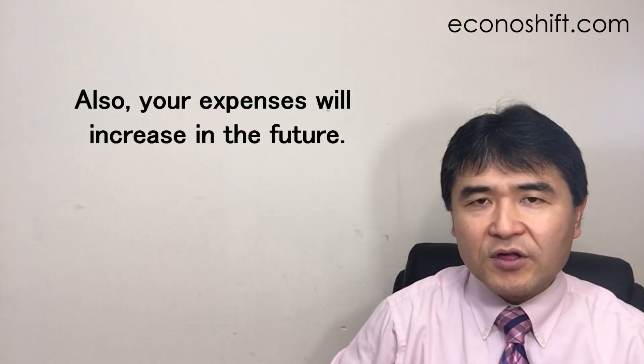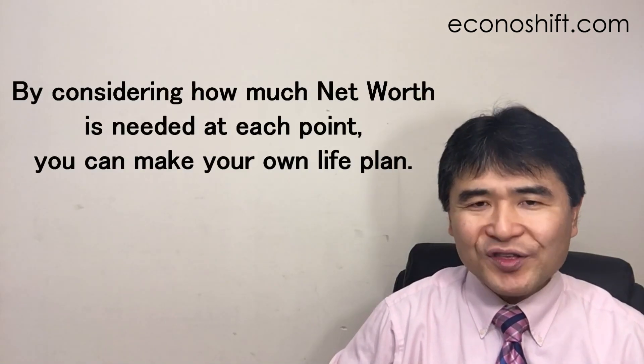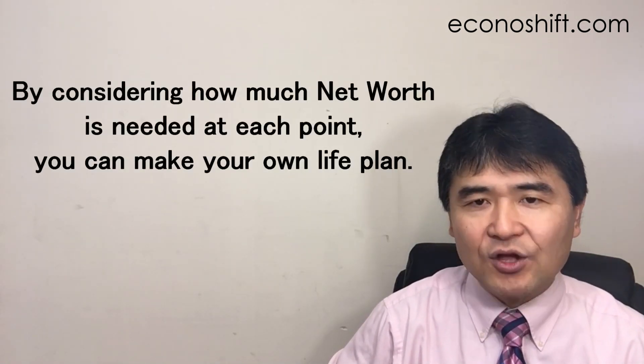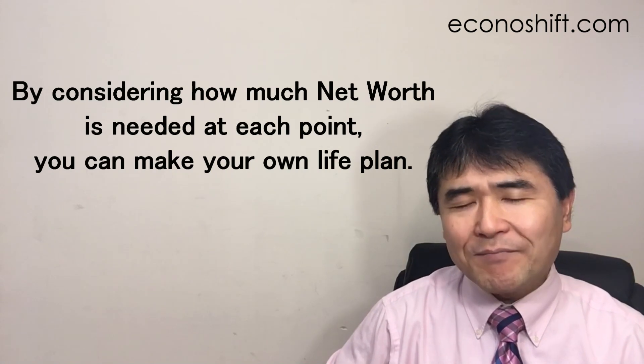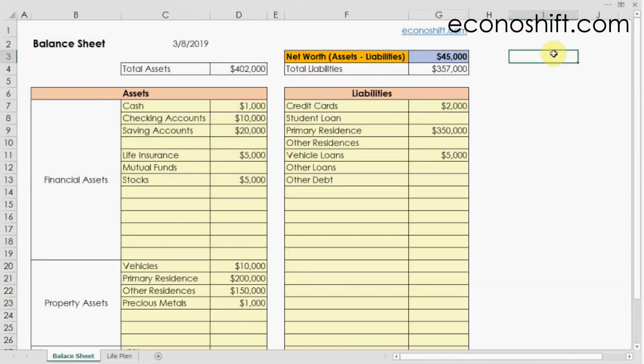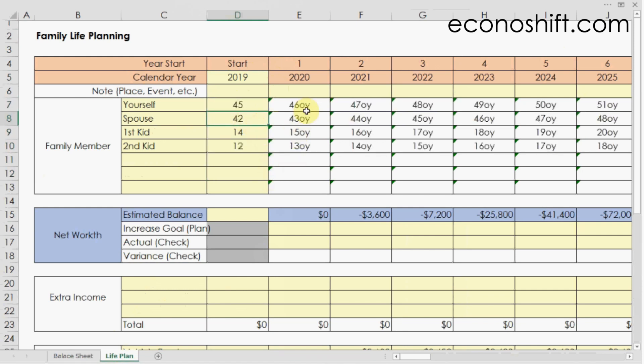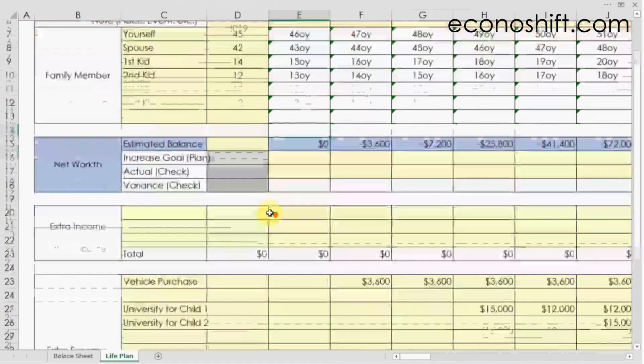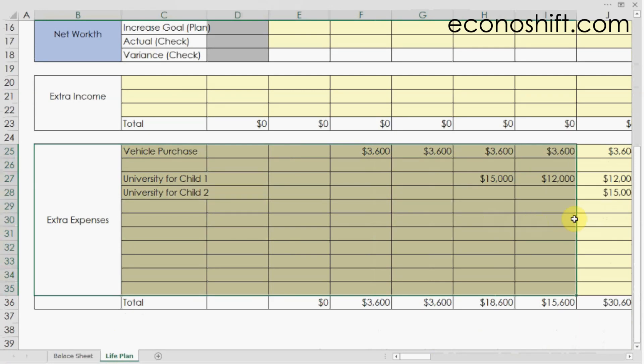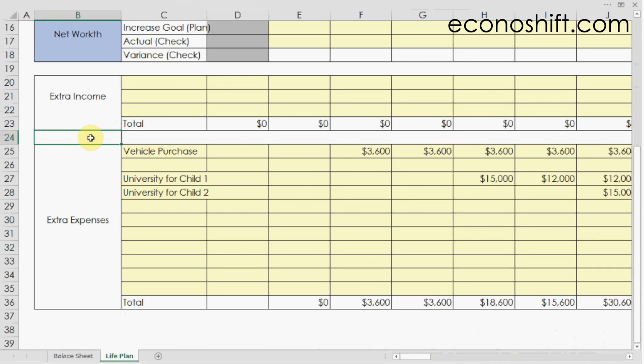Also, your expenses will increase in the future. By considering how much net worth is needed at each point, you can make your own life plan. I added a life plan worksheet to this template. Put the current year in cell D5 and enter the current ages of all your family members in column D. Then future ages will appear automatically. While considering those ages, enter estimated expenses in the extra expenses section when you'll need to pay for large expenses.